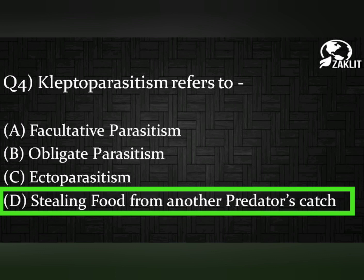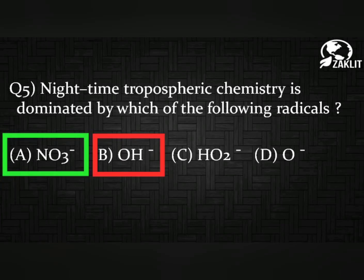Moving on to the fifth question: nighttime troposphere chemistry is dominated by which of the following radicals? In the nighttime troposphere, nitrate — that is option A — is the correct answer. Whereas in daytime, OH minus radicals, that is hydroxyl radicals, are more dominant.